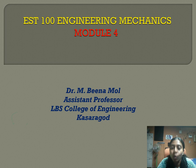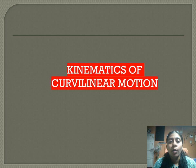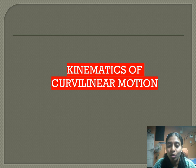Hello, welcome everybody. We are continuing our fourth module. We are in our kinematics of curvilinear motion. In the last class we saw when an object is subjected to curvilinear motion, how to represent its kinematics. We can represent the kinematics of curvilinear motion of an object in three different coordinates.